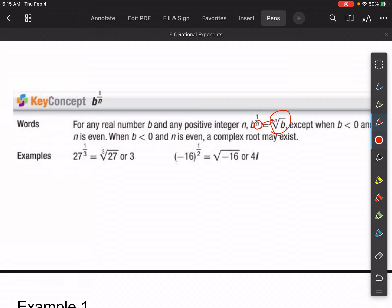Except when b is less than zero and n is even. When b is less than zero and n is even, a complex root may exist like we have here.